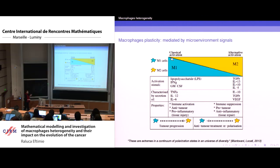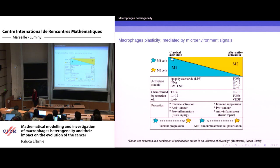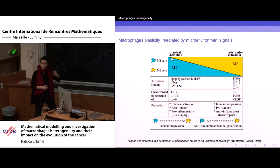For about 20 years, through papers by Mantovani and colleagues, we know that during tumor progression there is a transition from M1 cells — the anti-tumor cells — towards the M2 phenotype. And recently, experimentalists and clinicians have tried to repolarize macrophages, because their phenotype is given by the environment and the factors in the environment.